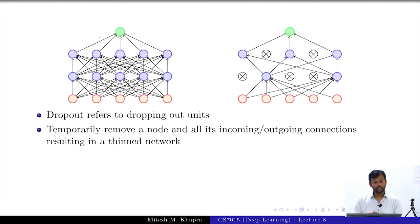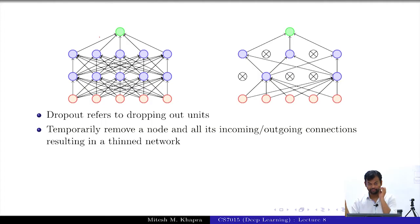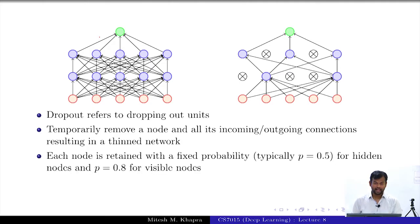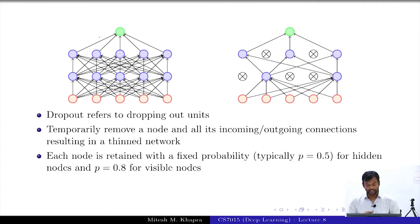What is effectively happening is you get a new network architecture. But we already established that we do not want many architectures because it is expensive to train all of them and at test time we have to pass through all of them. Each node is retained with a fixed probability — for hidden nodes typically 50%, and for input nodes typically 20%. These are hyperparameters you tune.